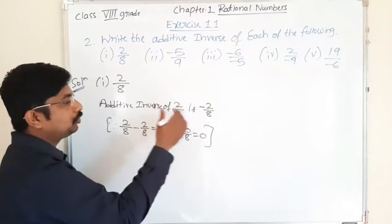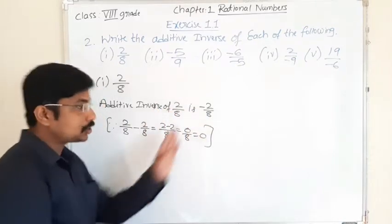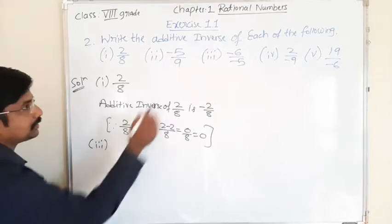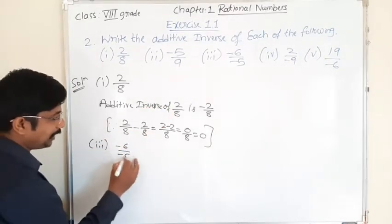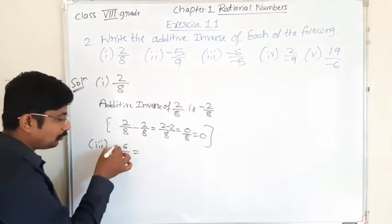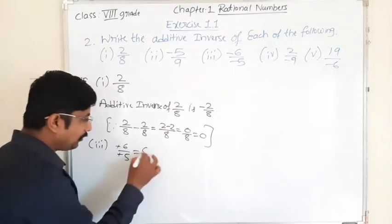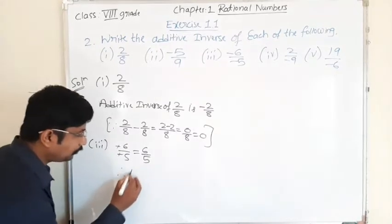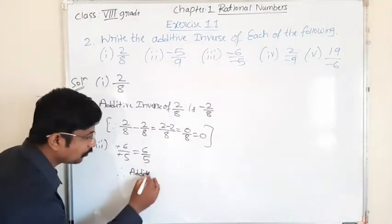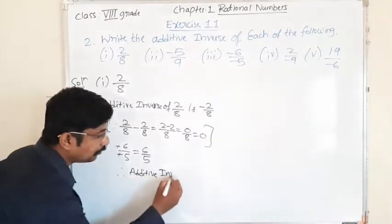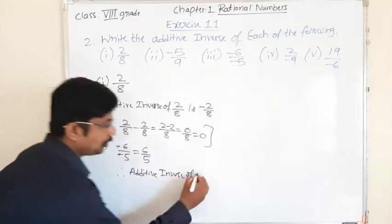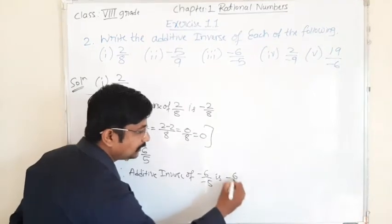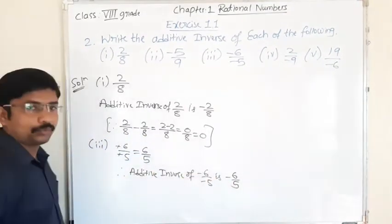Therefore, additive inverse of 2 by 8 is minus 2 by 8. I am solving the third one. That is minus 6 divided by minus 5, which equals - minus minus gets cancelled, we're left with 6 by 5. Therefore, additive inverse of minus 6 by minus 5 is minus 6 by 5.